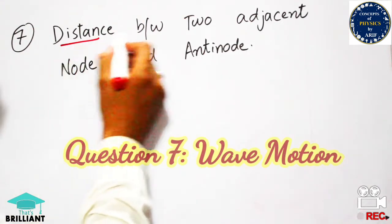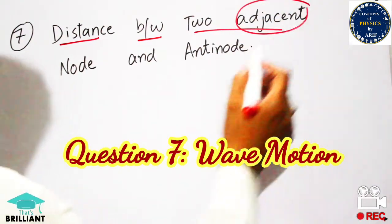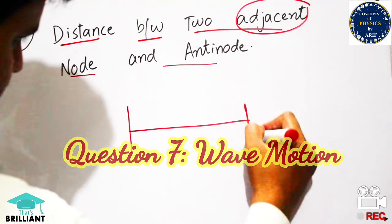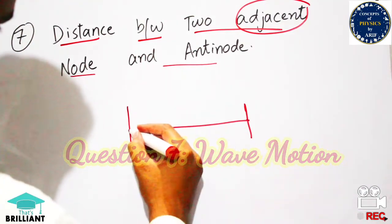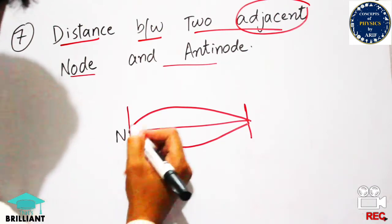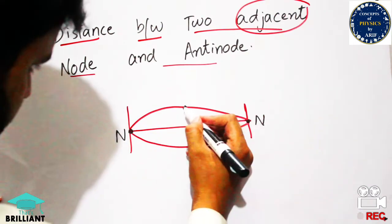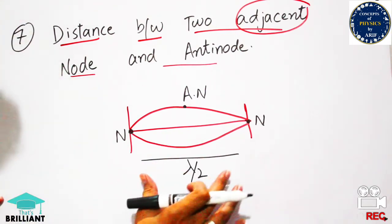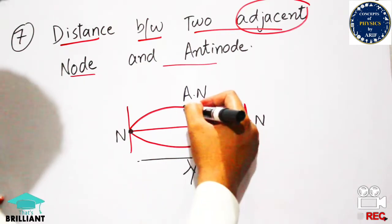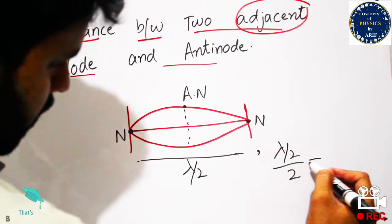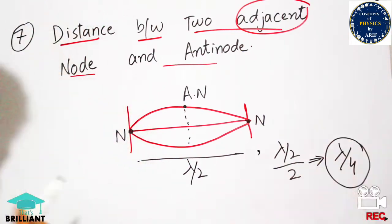The next question, from the wave motion chapter, asks for the distance between two adjacent node and antinode. Consider a string fixed at two points: the endpoints are nodes and the midpoint is an antinode. The distance between two nodes is λ/2. The distance between a node and an adjacent antinode is half of λ/2, which equals λ/4. The final answer is λ/4.